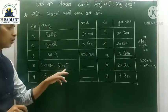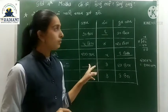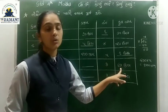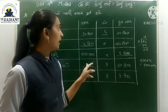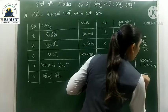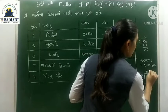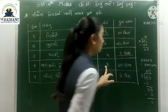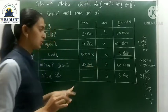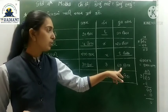બટેટા ના કોથળા — 1 બટેટા ના કોથળા નું વજન શોધવાનું છે. 3 કોથળા છે, અને કુલ વજન 9 કિલોગ્રામ. 9 ÷ 3 = 3, જીરો — 1 કોથળા નું વજન 3 કિલોગ્રામ. 3 કિલોગ્રામ ના 3 કોથળા, ટોટલ 9 કિલોગ્રામ.